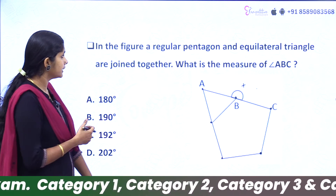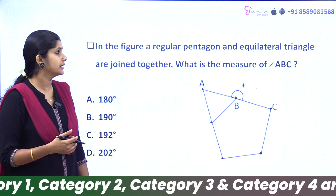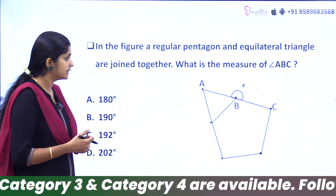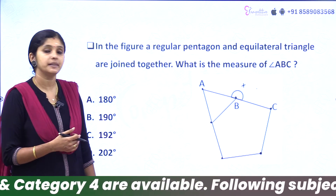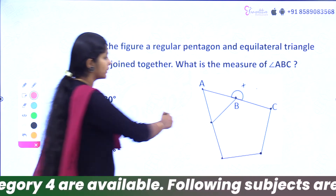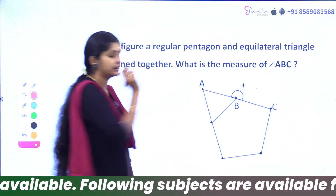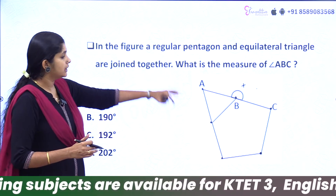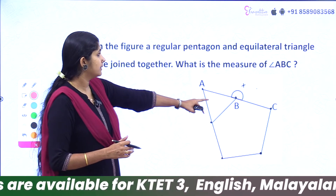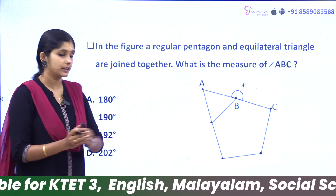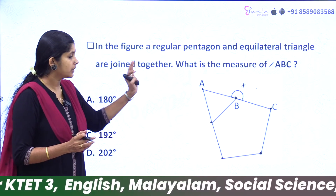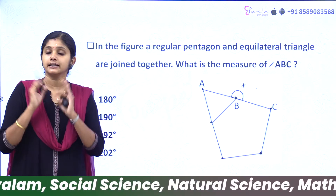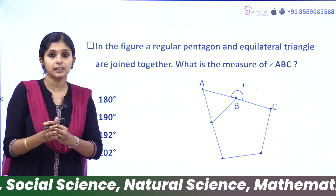In this figure, a regular pentagon and an equilateral triangle are joined. What is the measure of angle ABC? We know that a regular pentagon and an equilateral triangle have specific interior angles.